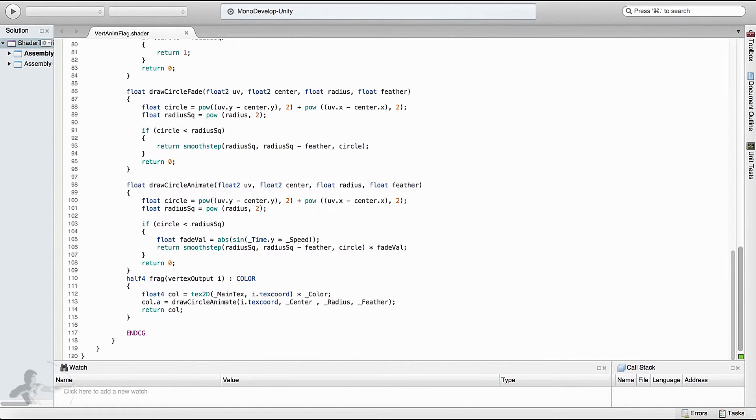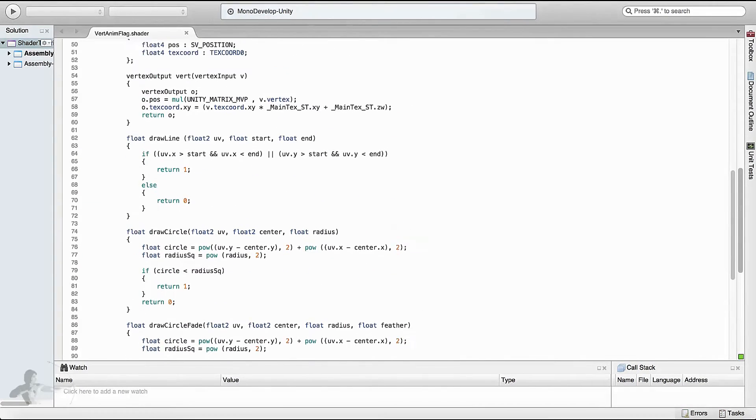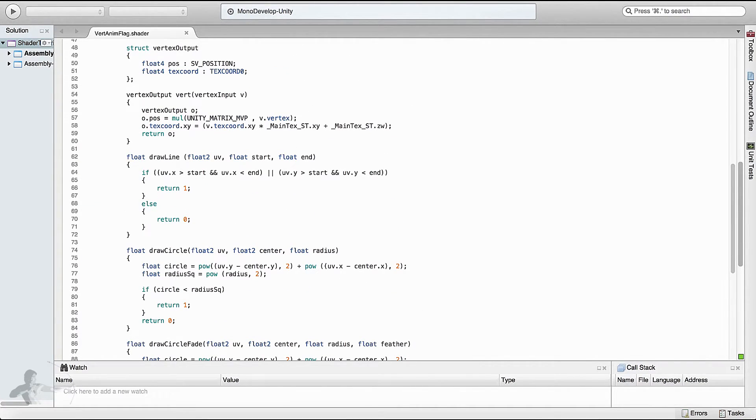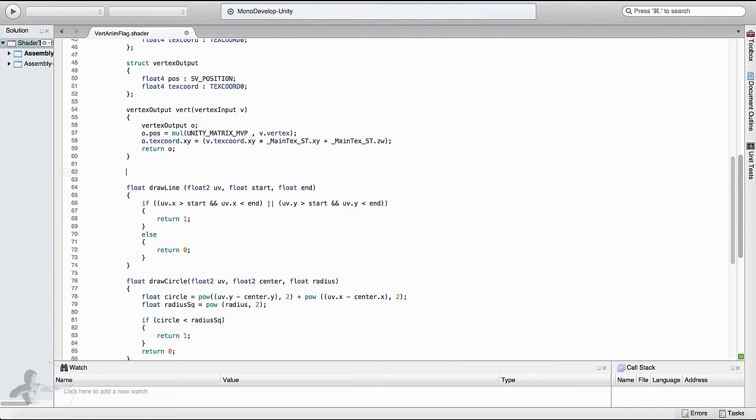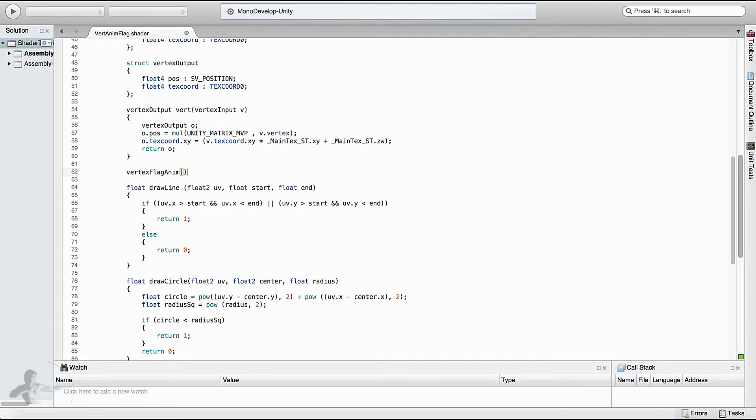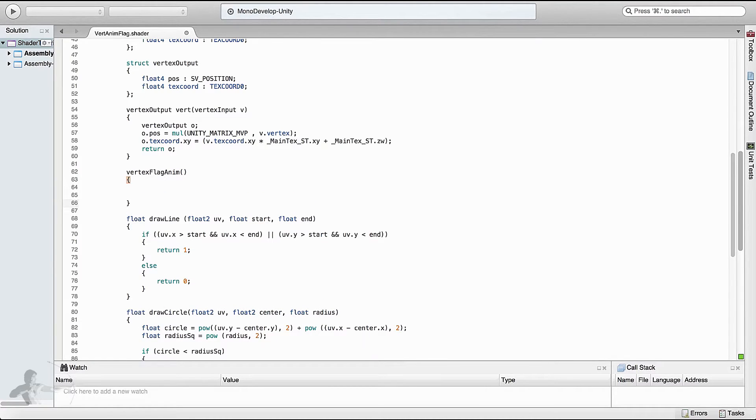First, as we have been doing, we will create a separate function which we will call vertex flag animation. I will create this function over draw line. Let's name the function vertex flag anim. It will be returning a modified position of the vertex which will be a float4 value.